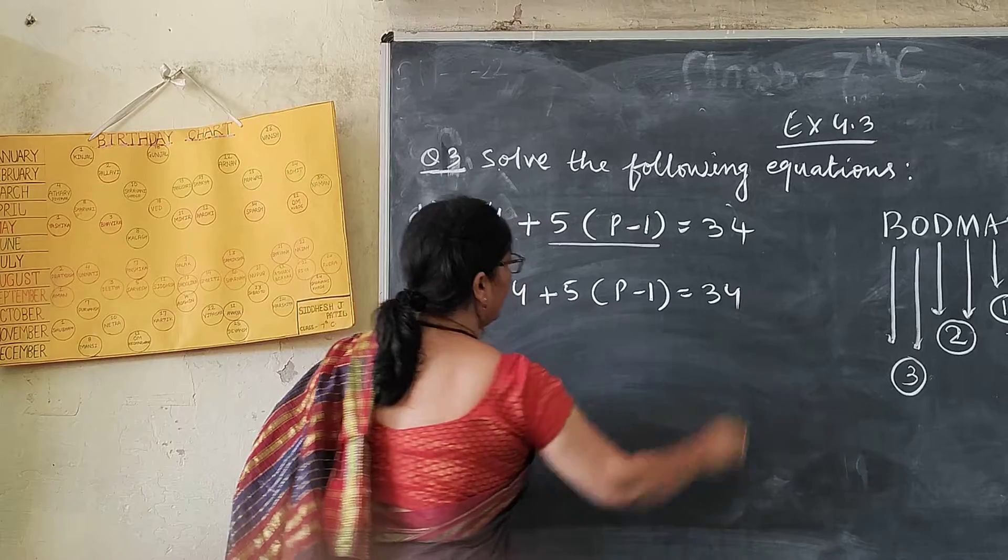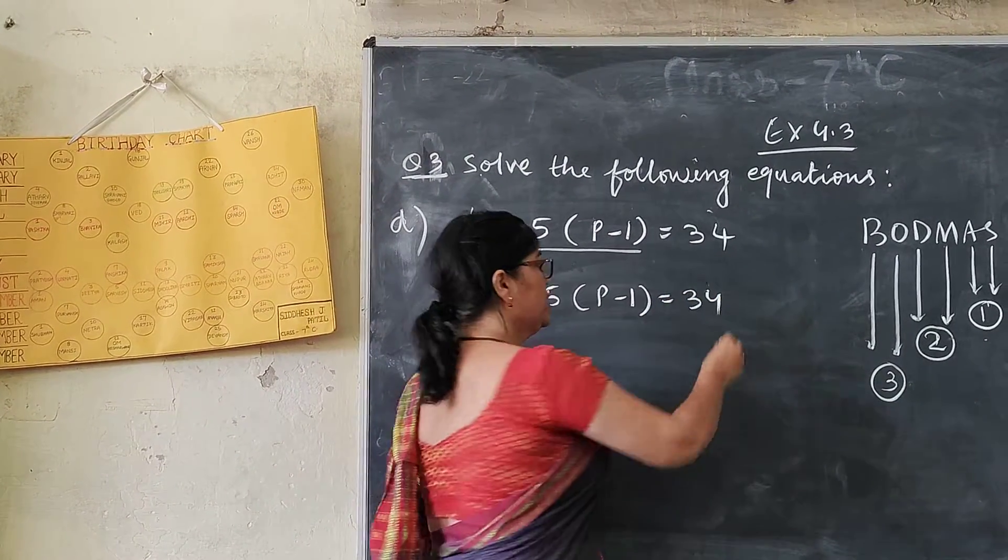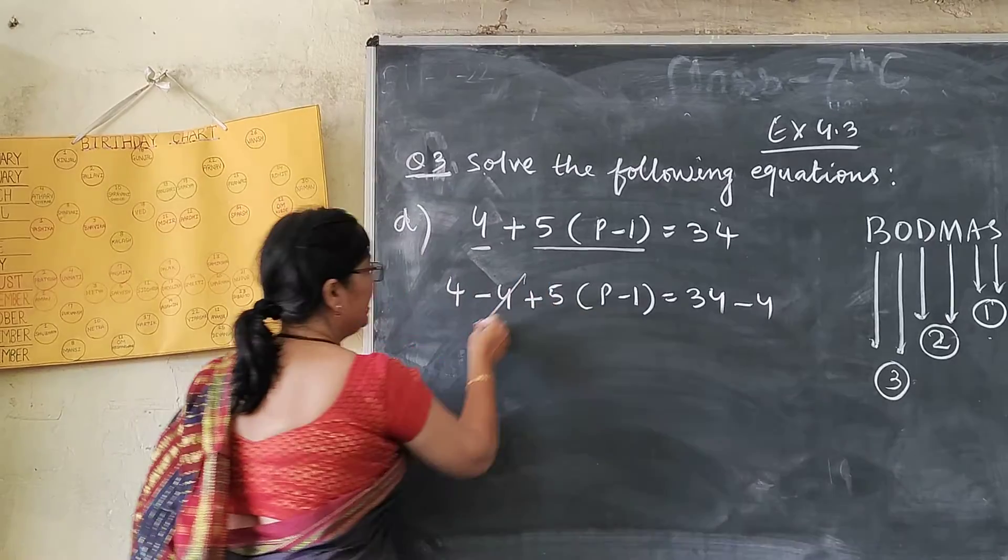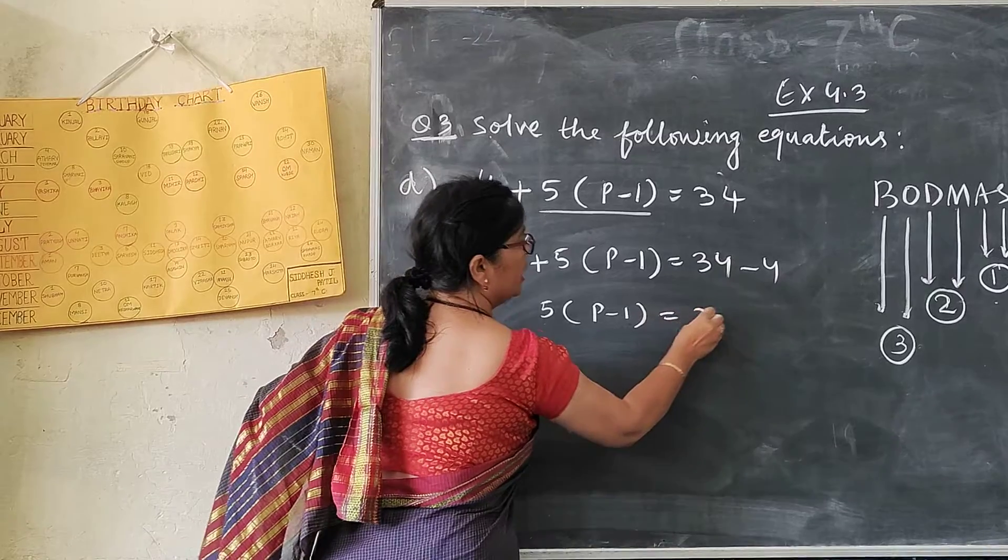This side also. Here I have done minus 4. So that side also minus 4. This will be cancelled. 5T minus 1 equals to 30.